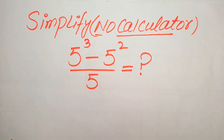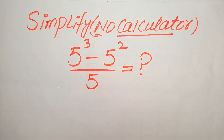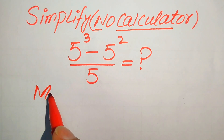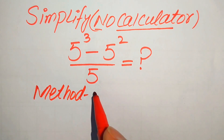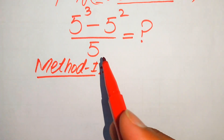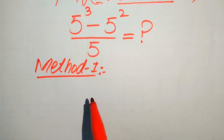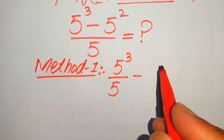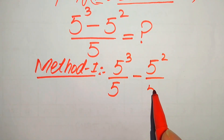I hope you like this method. In this question I will solve this problem using two methods. Now in the first method, we need to break this fraction and write the 5 separately on both values. It will be written as 5 cubed divided by 5, minus 5 squared divided by 5.